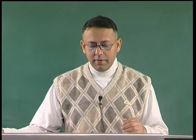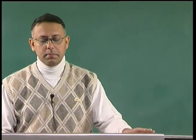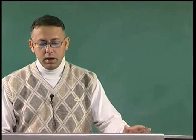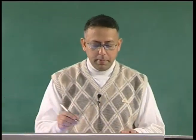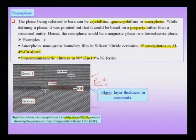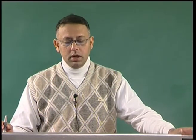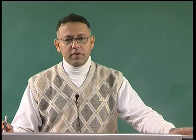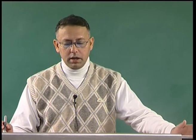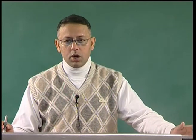You could also have a classification based on a property, and you could have super paramagnetic clusters in a 90 percent zinc, 10 percent nickel ferrite. To summarize: when talking about a nano phase, this phase could be defined based on a structural entity, like quasi-crystalline or amorphous.